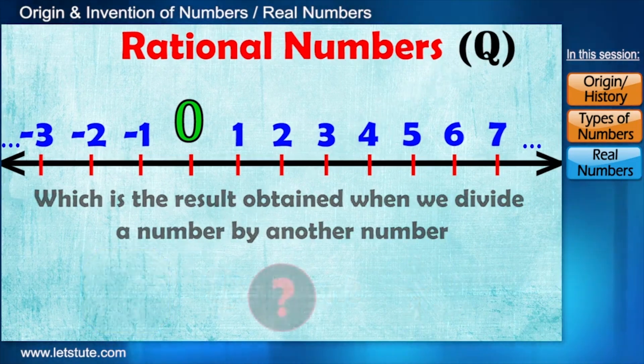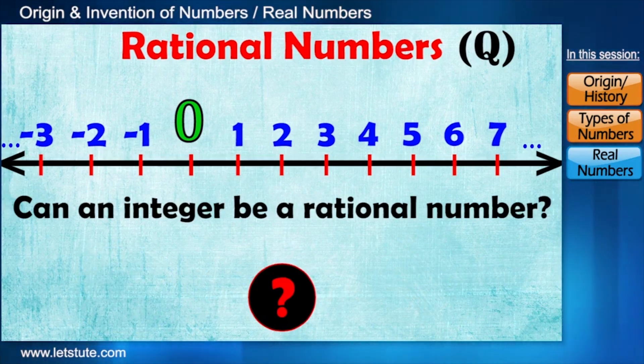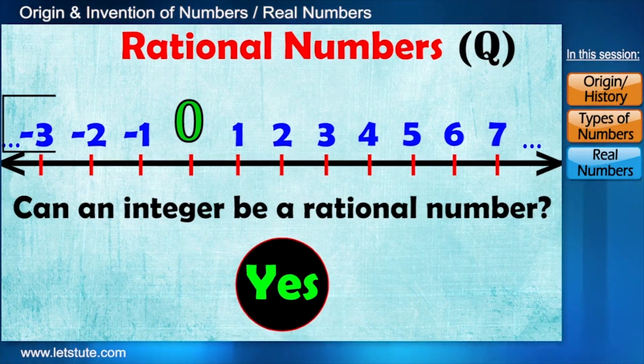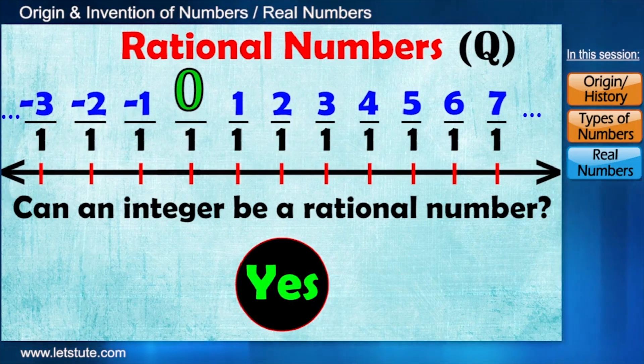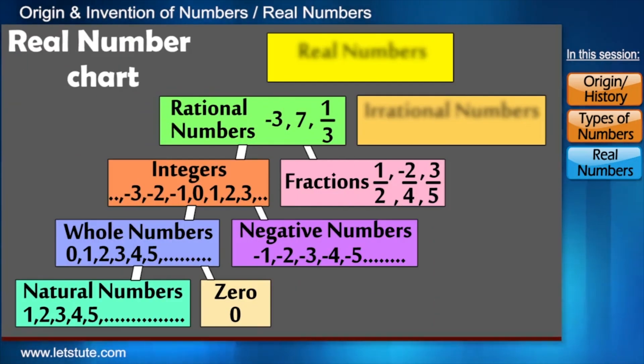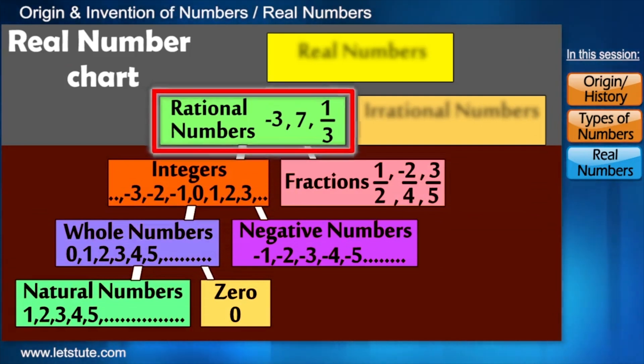So let me ask you all a question. Can an integer be a rational number? Yes, every integer is rational number. Because they can be written as having denominator 1. So friends, I can now say that every number we learnt till now comes into this set of rational numbers, right?